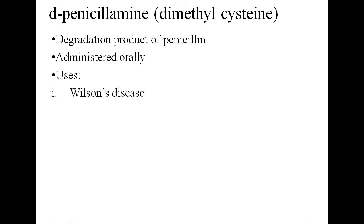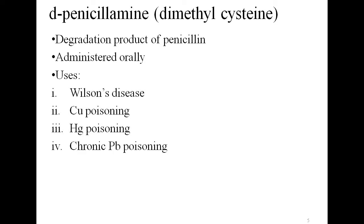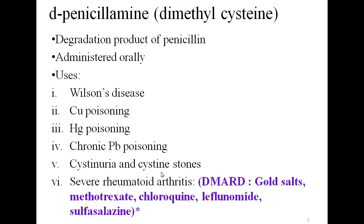D-penicillamine is used in Wilson's disease, copper poisoning (both acute and chronic), mercury poisoning, chronic lead poisoning, cystinuria, cystine stones, and severe rheumatoid arthritis — where it is used as a disease-modifying anti-rheumatoid drug (DMARD). A commonly asked exam question: name three or four disease-modifying anti-rheumatoid drugs.